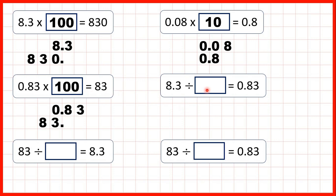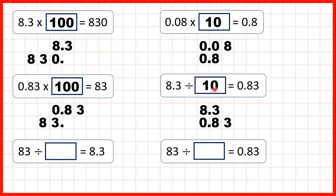Now we have some missing number division problems. Again, we know the answer will be either 10 or 100 because the non-zero digits in the question — an 8 and a 3 in our dividend — match the 8 and a 3 in our quotient. We write the numbers one below the other with the decimal points lined up. Here we can see the digits have moved one square to the right, and when we move the digits one square to the right we've divided by 10, because that has one zero.